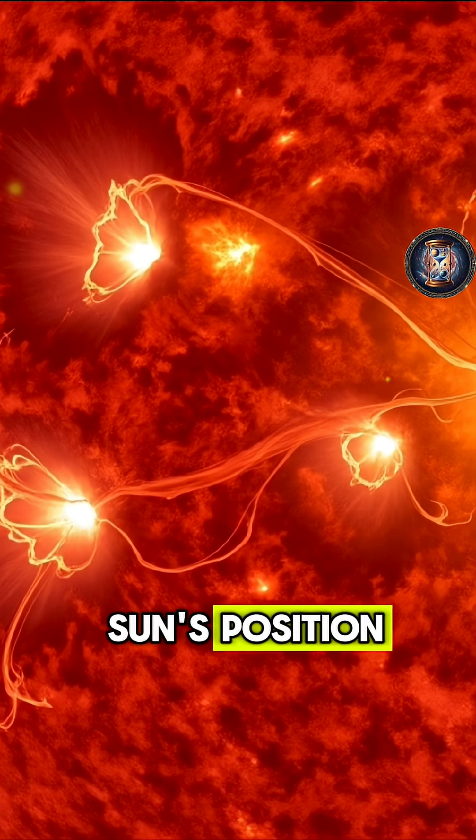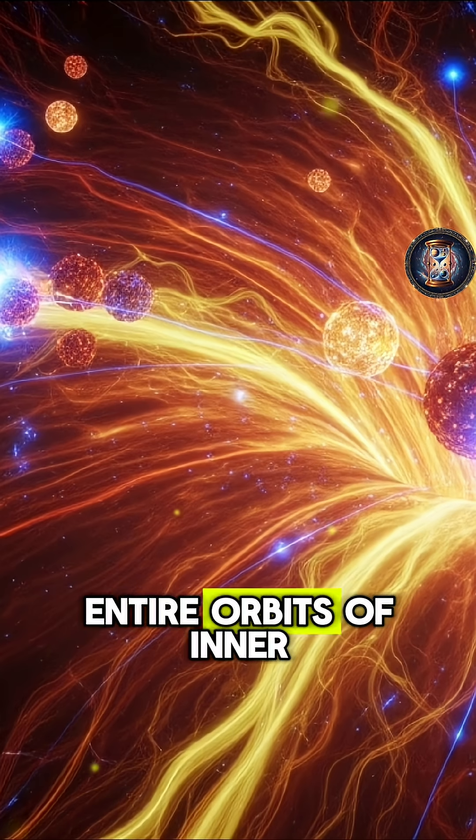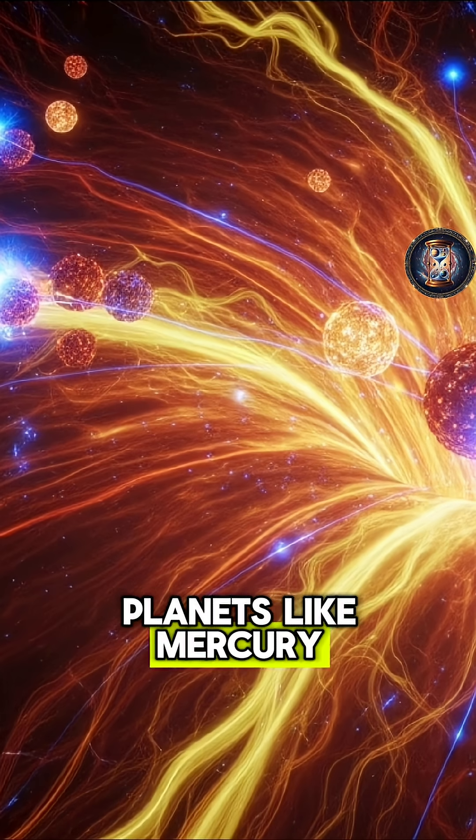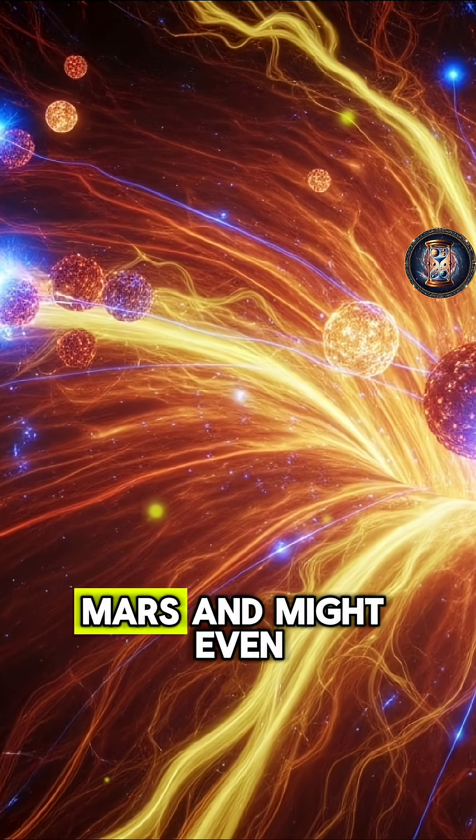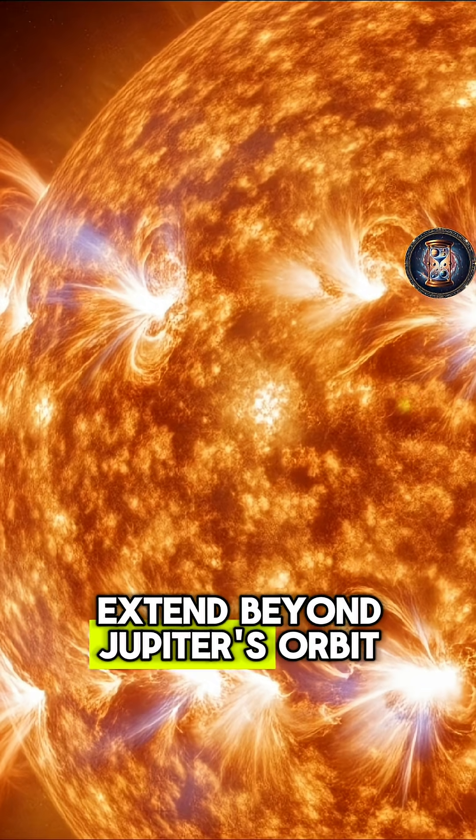If placed in the sun's position, they would engulf the entire orbits of inner planets like Mercury, Venus, Earth, Mars, and might even extend beyond Jupiter's orbit.